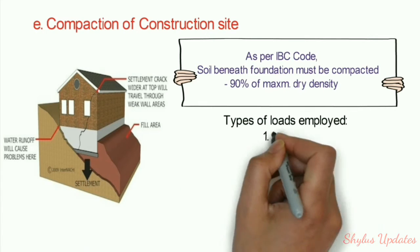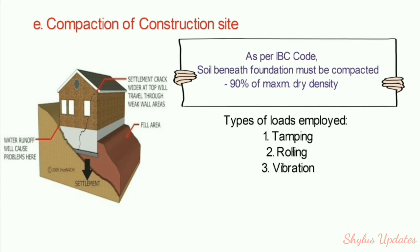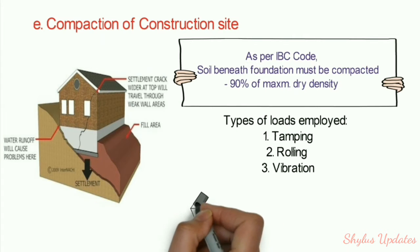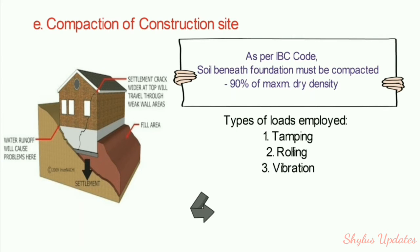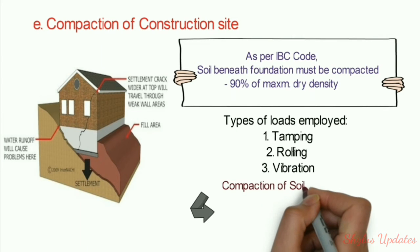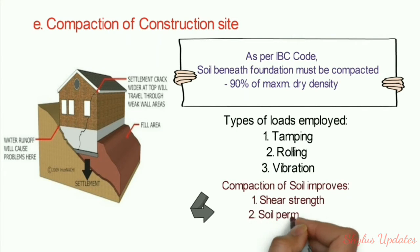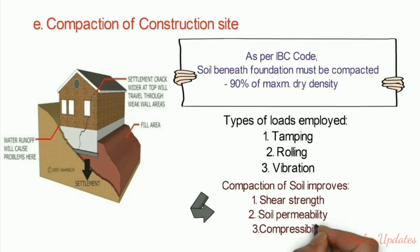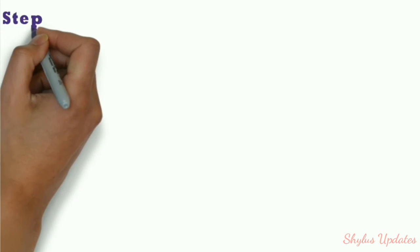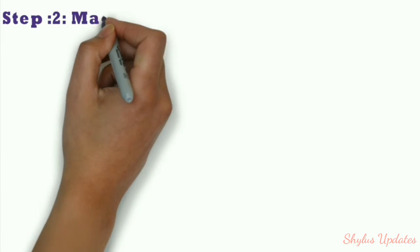Types of loads employed for compaction include tamping, rolling, and vibration. Compaction of soil improves shear strength, soil permeability, and compressibility.